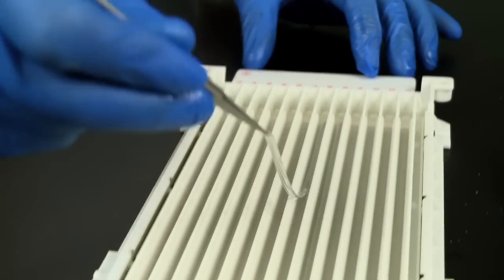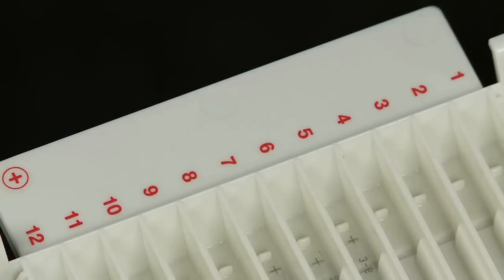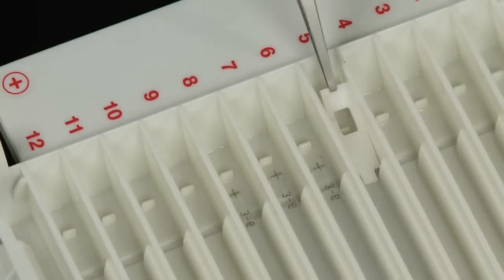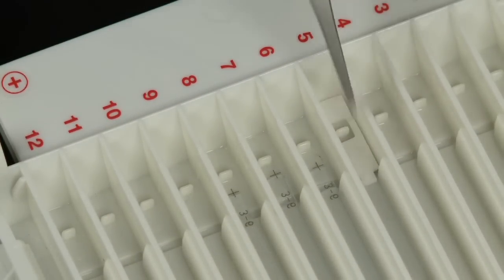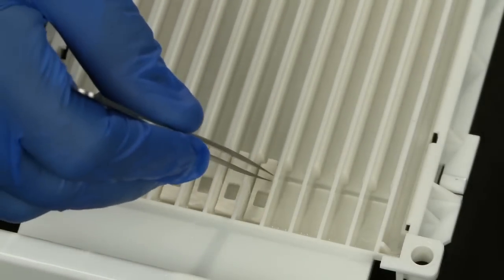First, place the rehydrated IPG strip gel side up in the focusing tray. At this point, you can add electrode wicks if you choose. Pre-wet the wicks and place them at the ends of the tray, on top of the IPG strip.